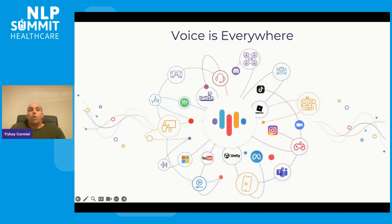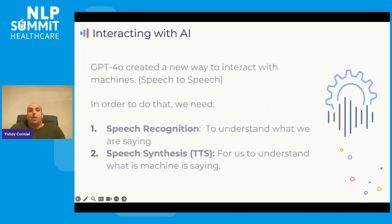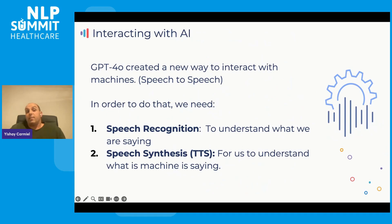One of the interesting things happening right now is that we see voice everywhere. In the past 12 months, we've seen an explosion in terms of how people are interacting with AI, and specifically for voice. GPT-4o created a new way to interact with machines. A lot of interactions that started with text are moving into voice — what we call voice-to-voice or speech-to-speech.